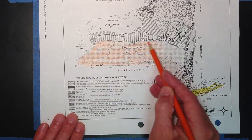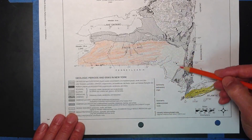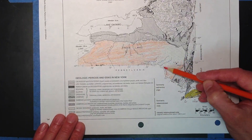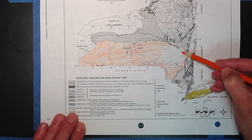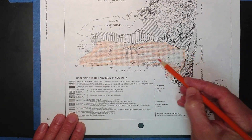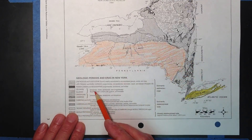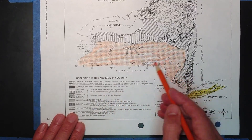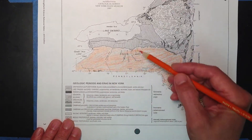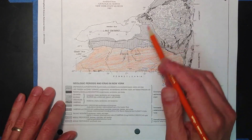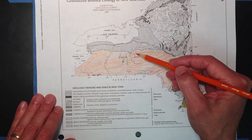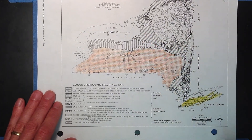It's a huge swath of New York State — all Devonian age. These are mainly sedimentary rock: limestone, shale, sandstones, conglomerates. And you can see here, as you go from here it goes to Silurian, then to Ordovician. So as you go this way, the bedrock is getting older, which is interesting to think about.